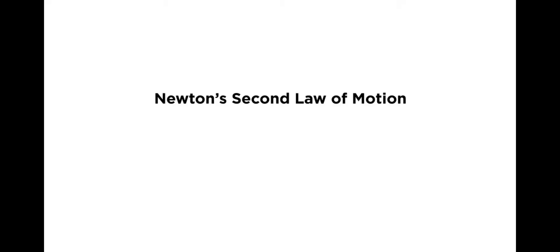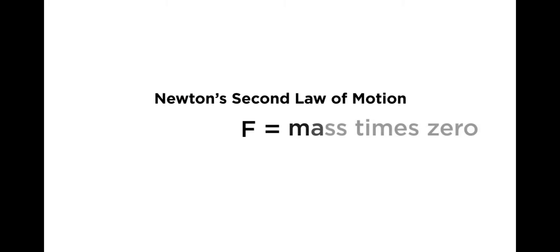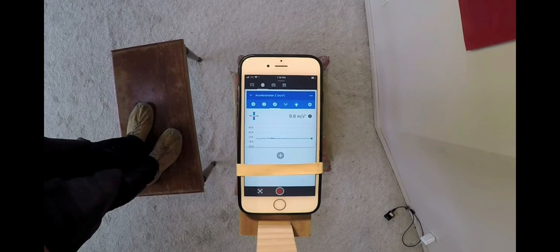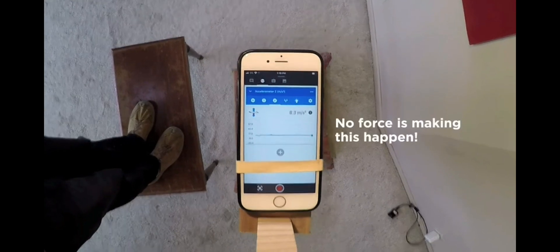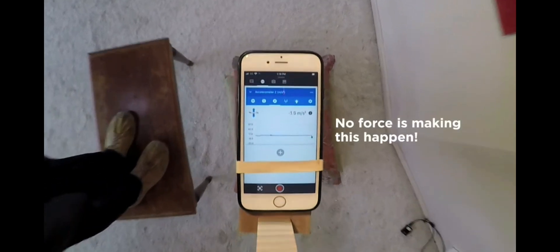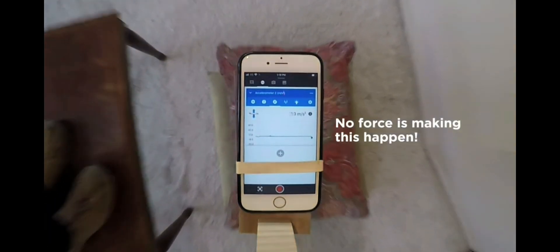Newton's second law of motion says that force equals mass times acceleration. So if the acceleration measurement is zero, then any measurable forces acting on the phone must also be zero. Gravity must not be a force that causes the phone to fall to the floor.